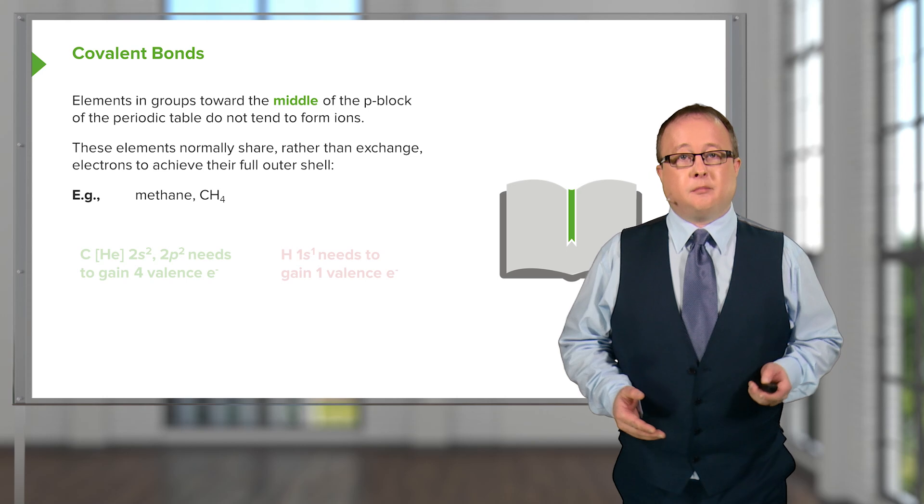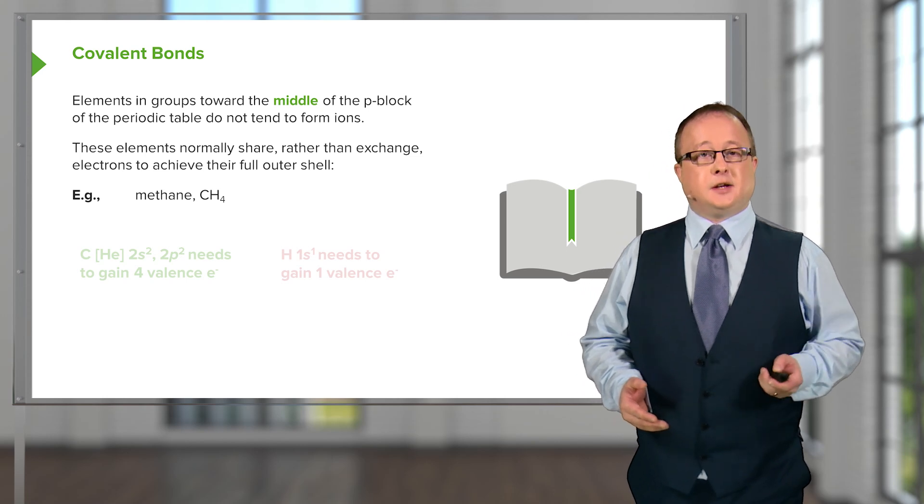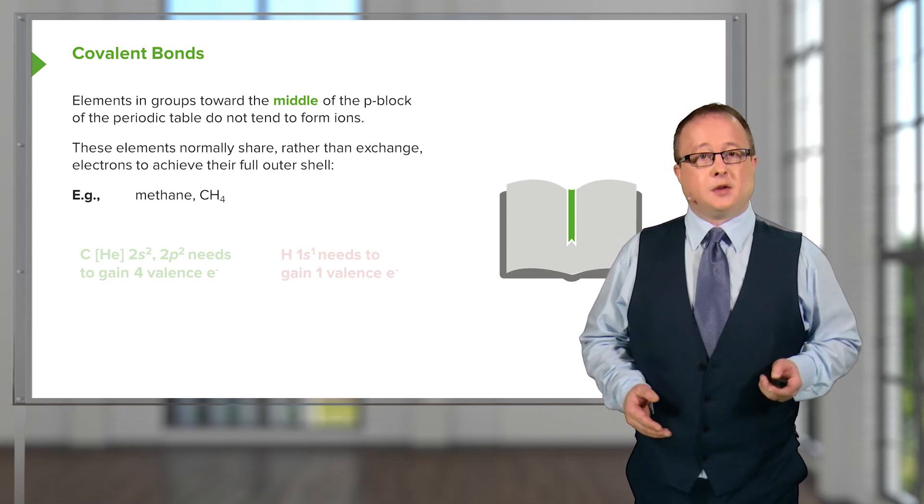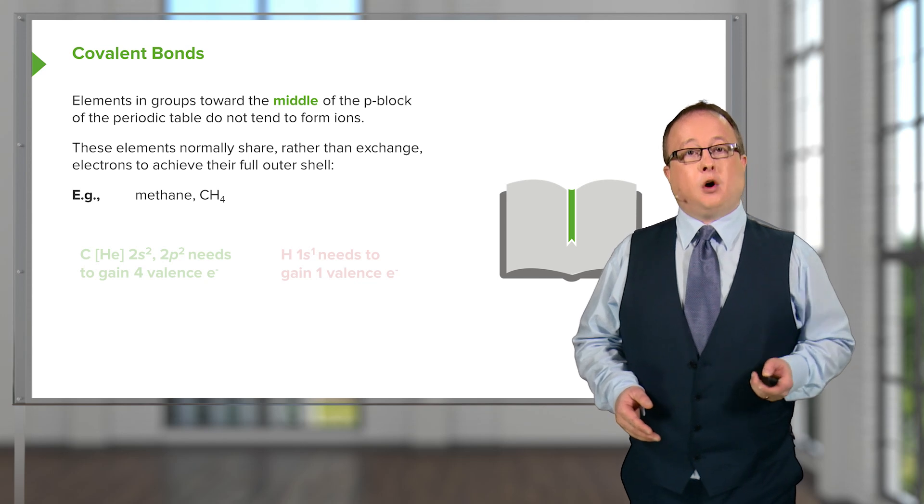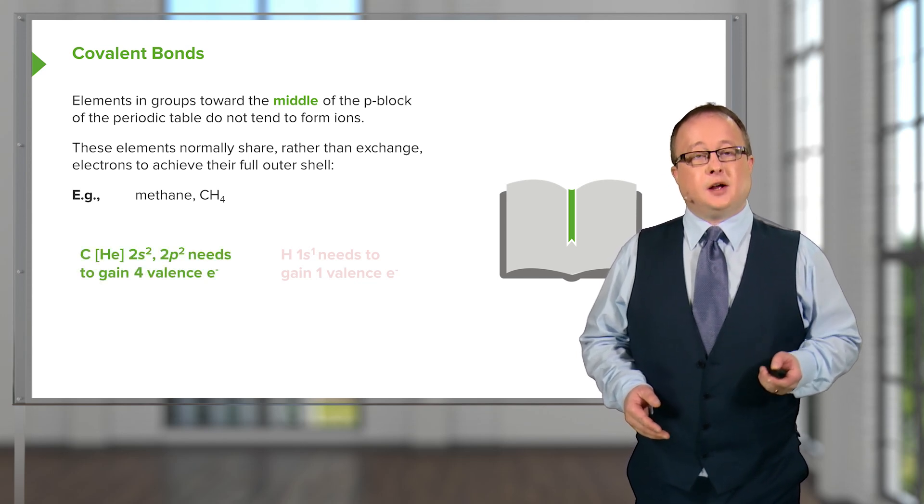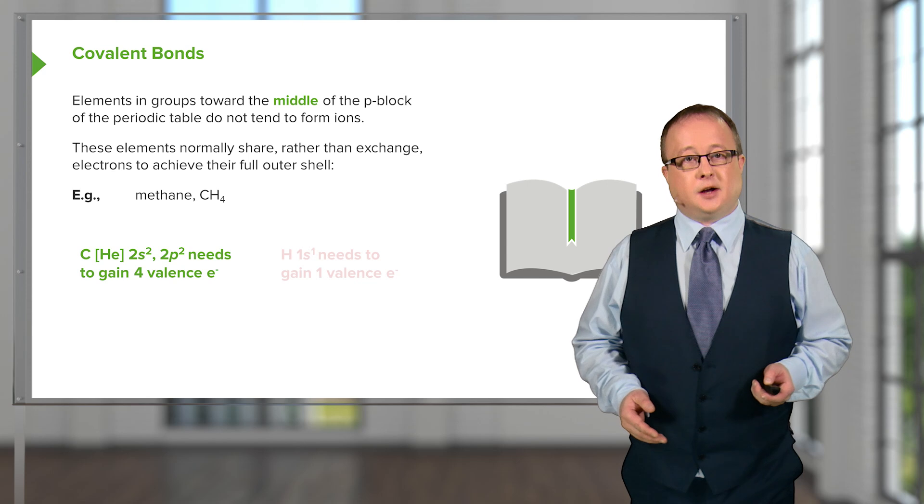Let's take for example methane. This consists of two elements, one carbon and four hydrogen atoms. Let's consider those individual atoms in isolation.